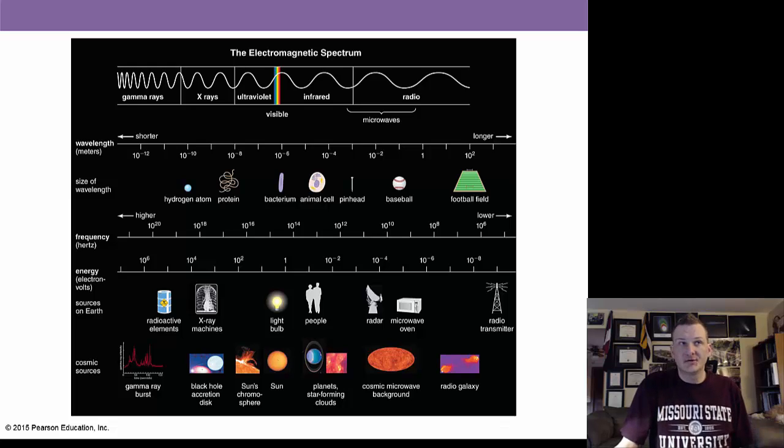All the energy in the universe is on the electromagnetic spectrum. This goes from very high-energy short-wave gamma rays to x-rays, ultraviolet. The visible that we see is only a very small part, infrared, the heat energy, and radio, which is very long wavelengths, but very low energy.